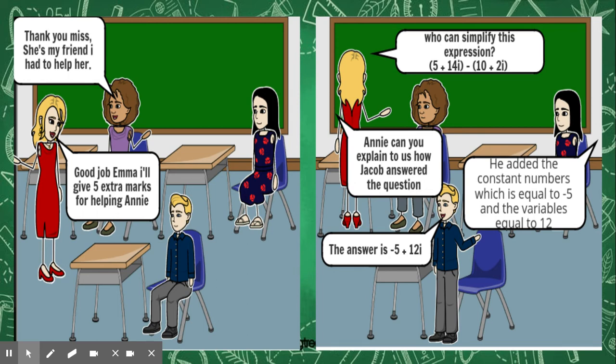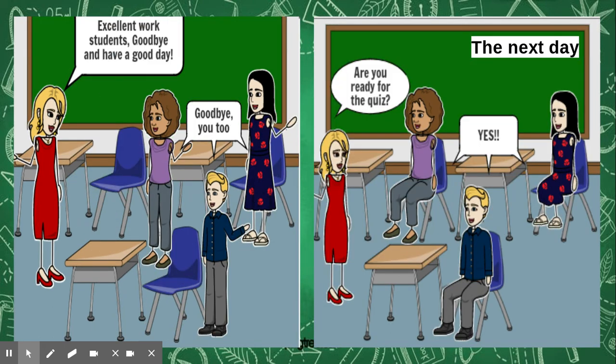The teacher said in class, who can simplify this expression? Five plus fourteen i minus between brackets five ten plus two i. Jacob answered, the answer is negative five plus twelve i. The teacher said, Annie, can you explain to us how Jacob answered the question? Annie answered, he added the constant numbers which equals negative five and the variable equals twelve. The teacher said, excellent work students.